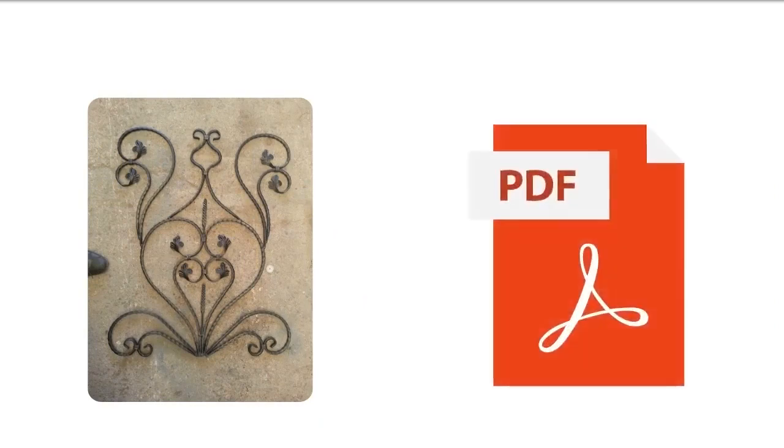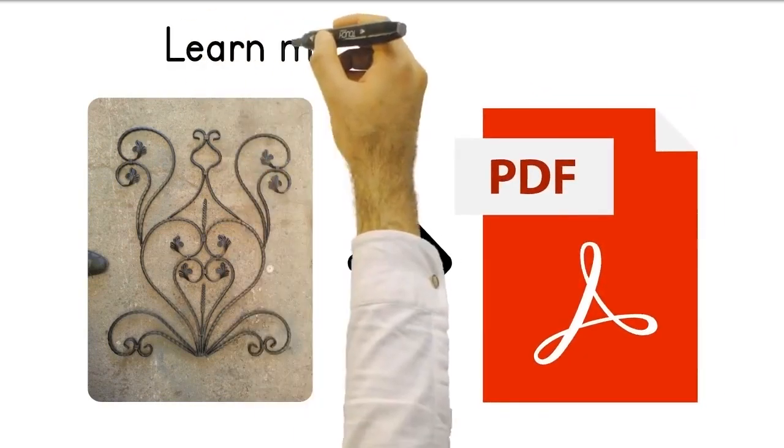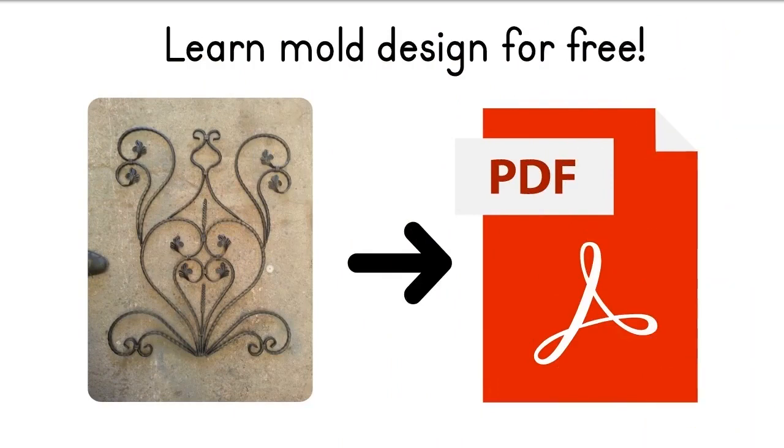When you buy the machine and receive a demand from your customers for wrought iron production that is not in any catalog, don't worry. A PDF file describing the logical sequence of how the molds are produced will be sent to you free of charge.